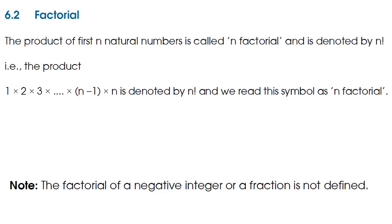Now first we will see what is a factorial. The factorial is nothing but the product of first n natural numbers. It is called n factorial and it is denoted by this symbol. So if we consider n factorial, it is the product 1 × 2 × 3 × ... × (n-1) × n, denoted as n! Based on this definition, 1 factorial is equal to 1.